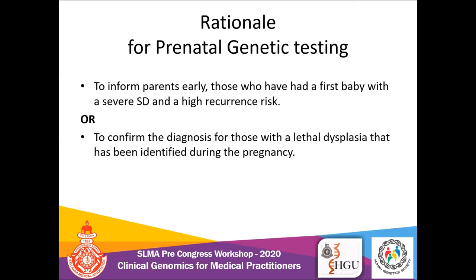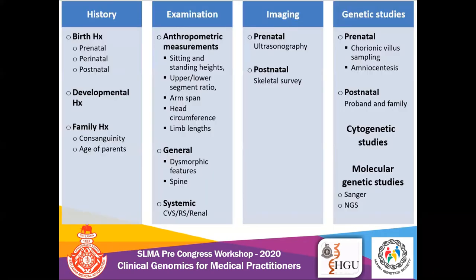The rationale for prenatal diagnosis is to inform parents early — those who have had a first baby with a severe skeletal dysplasia and a high recurrence risk, or to confirm the diagnosis for those with a lethal dysplasia identified during pregnancy. For an accurate diagnosis, a focused history and examination is important, followed by imaging and if indicated genetic studies.